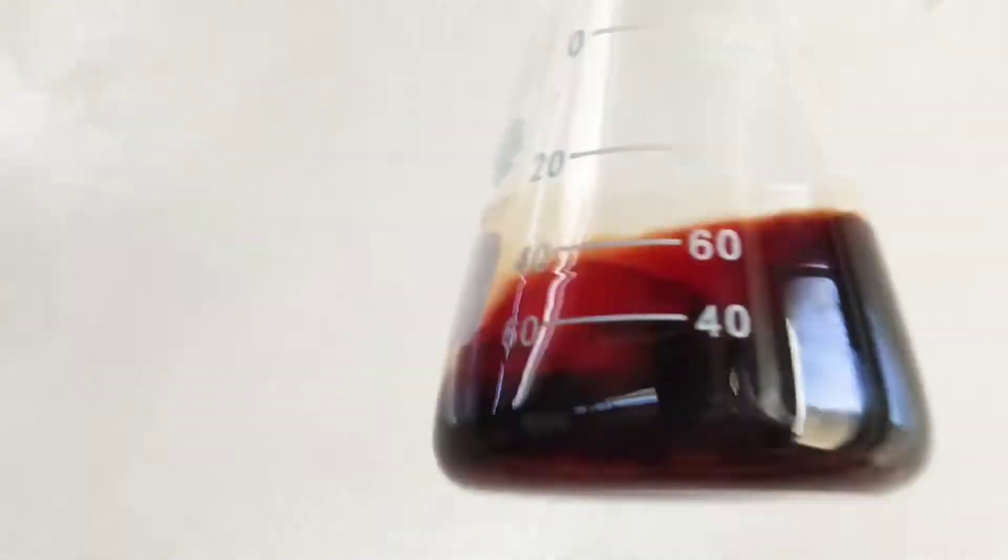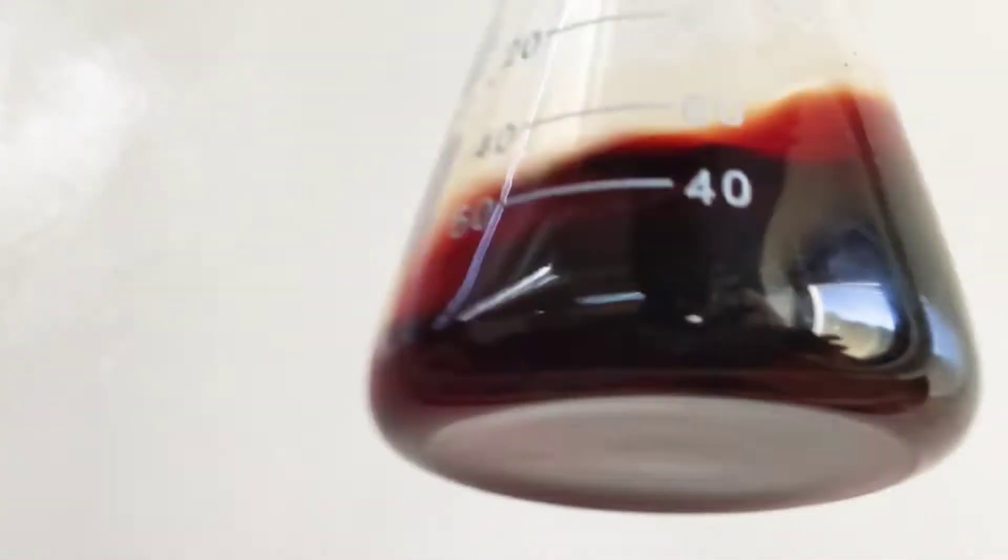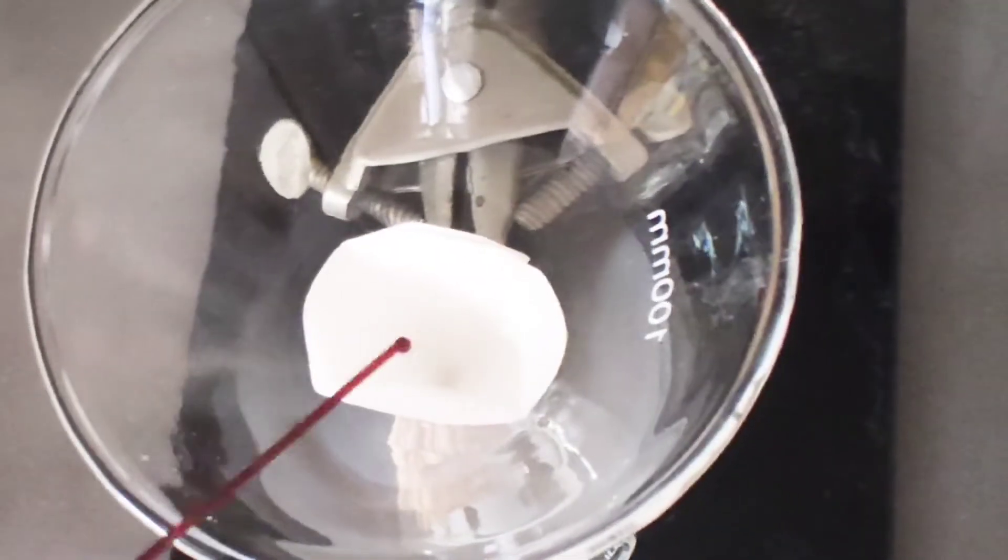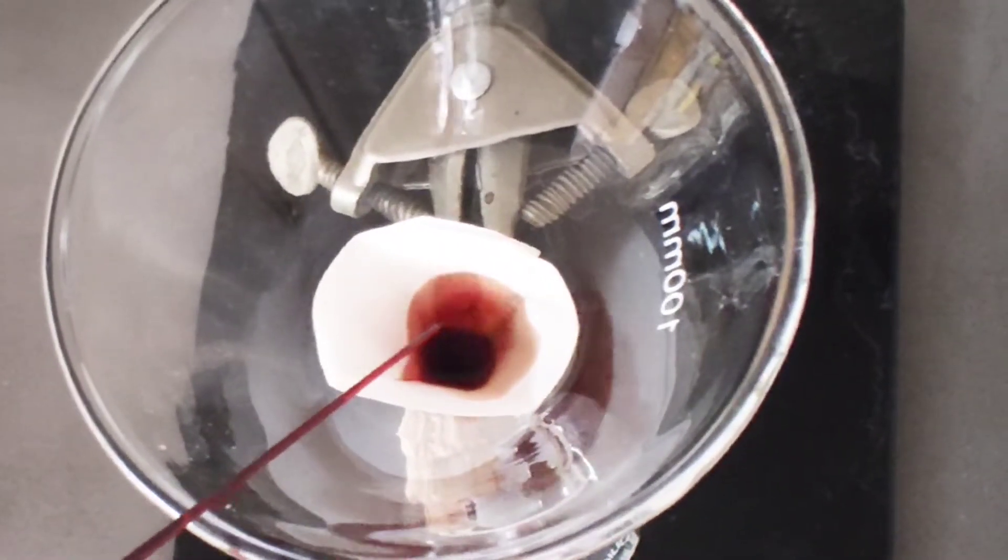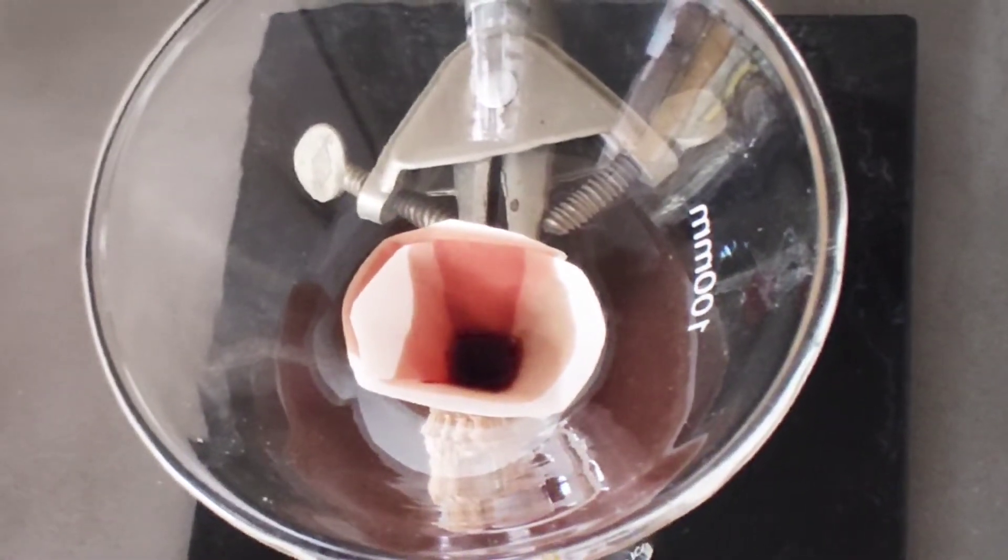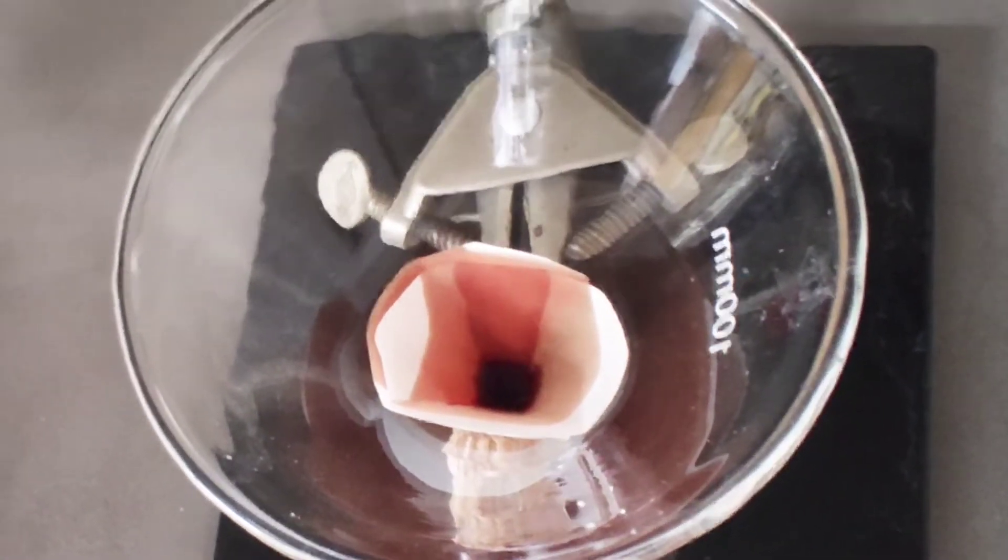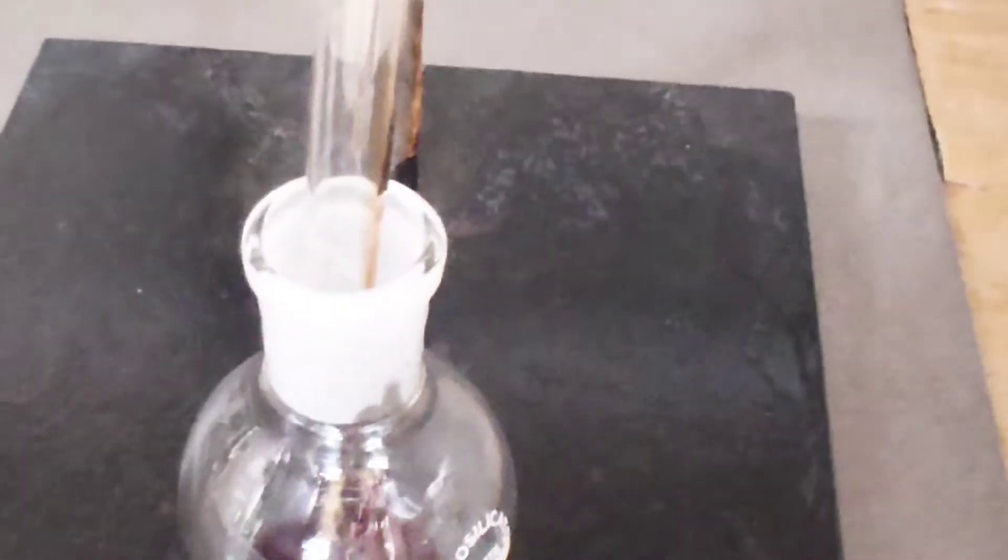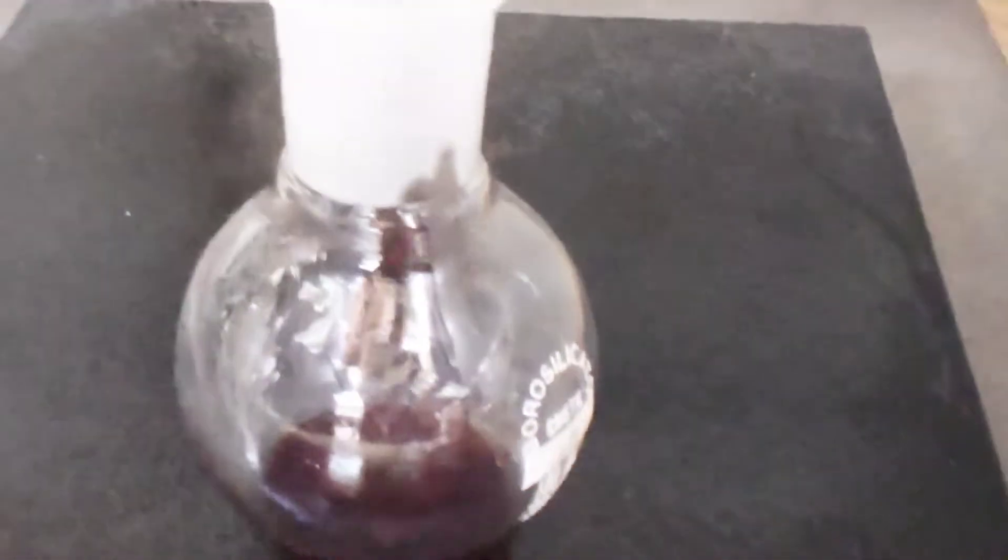After a few minutes we filter the solution in order to get a DCM solution of the cobalt corrole dry that we are going to then evaporate and start to recrystallize. We collect the red-brown filtrate in a round bottom flask.